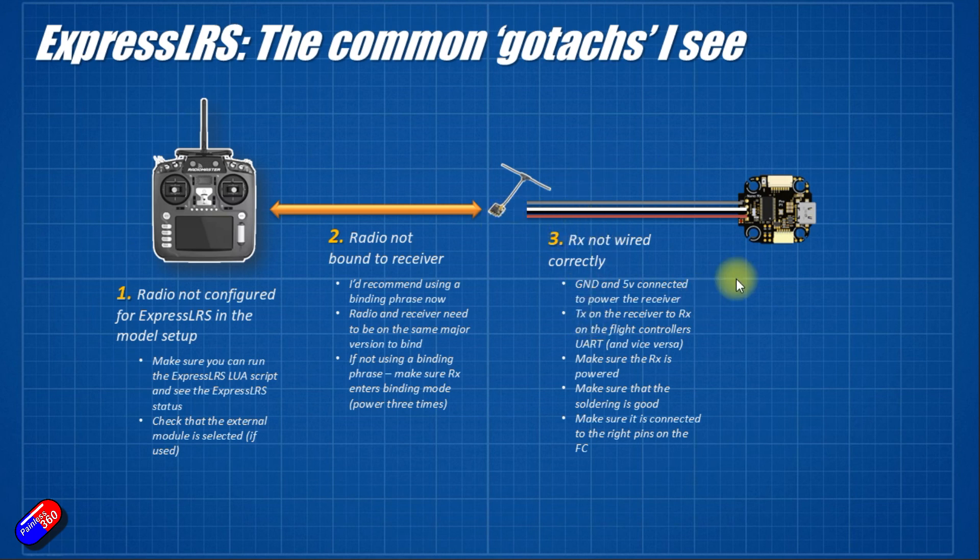And of course, make sure that the receiver is powered. Luckily, most of the times these days when you plug your flight controller in, it will supply five volts to the receiver. So the receiver will be powered. And while it's powered, just plugged into the computer, then that means you can also go and do the radio configuration and bind it before you have to start plugging batteries and things in.